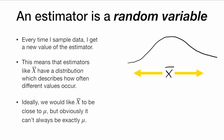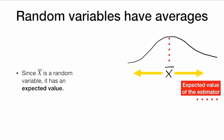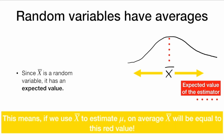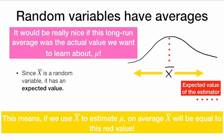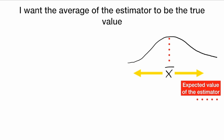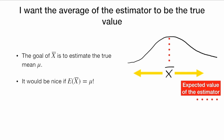Ideally, we would like x-bar to be close to mu, but obviously it can't always be exactly equal to mu. One thing about random variables is they have averages. Since x-bar is a random variable, it has an average, or an expected value. We can see the distribution of x-bar here, and this red line is the expected value — the average of that distribution. This means that if we use x-bar to estimate mu, on average x-bar will be equal to this red value. It would be really nice if this long-run average was the actual value we want to learn about, which is mu. So I want the average of the estimator to be the true value — it would be nice if the expected value of x-bar was mu.